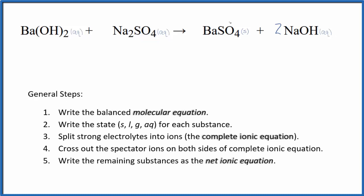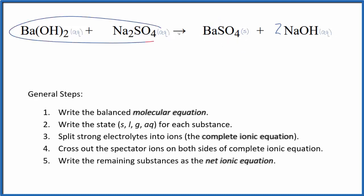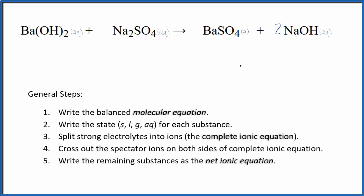One of the exceptions is barium sulfate — it's insoluble. These two substances react and we get this insoluble compound. It's a solid and falls to the bottom of the test tube as a precipitate. So those are the states for our net ionic equation.